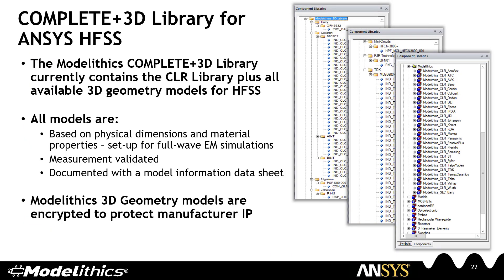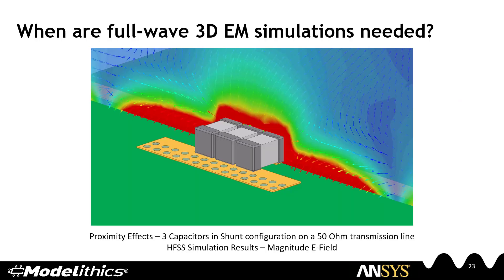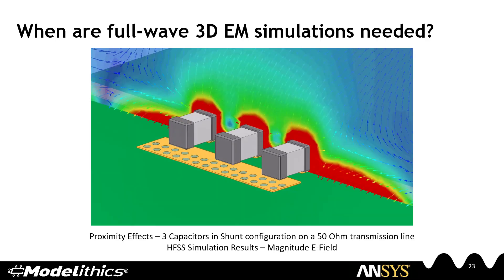Modelethics offers the Complete Plus 3D library for ANSYS HSS. Currently, this library contains the full CLR library plus all available 3D geometry models for HSS. All models are documented with a model information datasheet, and the 3D models are based on physical dimensions and material properties and set up for full-wave EM simulation. Once again, all of our models are measurement validated to ensure accuracy. To protect manufacturer IP, Modelethics 3D geometry models are encrypted as well.